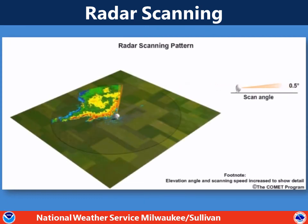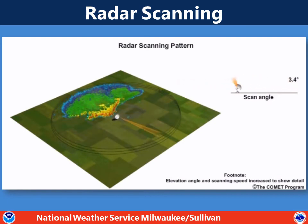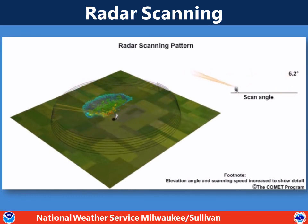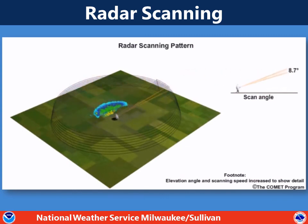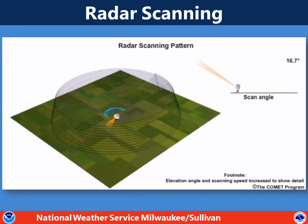So when a radar scans, it starts at a base elevation and it does a complete circle. Then it tilts up just a little bit and does another circle. It tilts up more and does another circle around the base. And then eventually, when it gets done with the scanning pattern, it will go back down to the base scan and start over again.